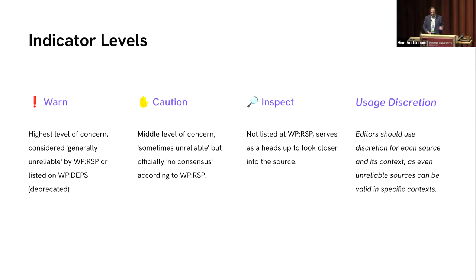There are three different indicator levels. The red exclamation point 'warn' is the highest level, indicating sources considered generally unreliable as a matter of Wikipedia community consensus. The two main forums for noting unreliable sources are RSP, the perennial reliable sources list, and DEPPS, the deprecated sources list. For something to end up on the perennial sources list, it has to be a source the community has debated over and over again, and after consensus it can be marked as deprecated, hence the warning icon.